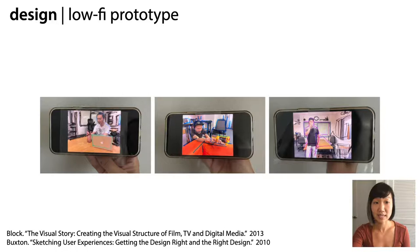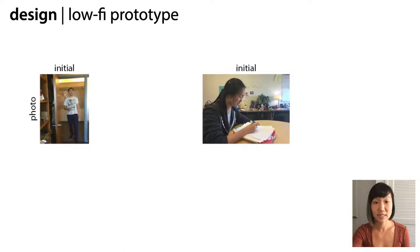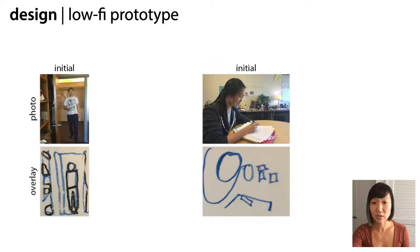We ran a Wizard of Oz study with 19 participants where experimenters manually drew outlines on overlaid transparencies taped to the phone. Here are two photos taken by our participants. We instructed them each to frame a photo of a person interacting with an object of their choice. Once they took their initial photo, experimenters outlined the objects in the photo on a transparency, shown below.